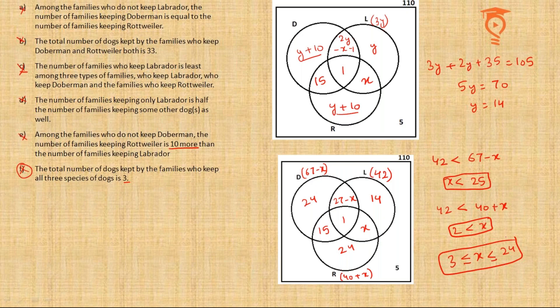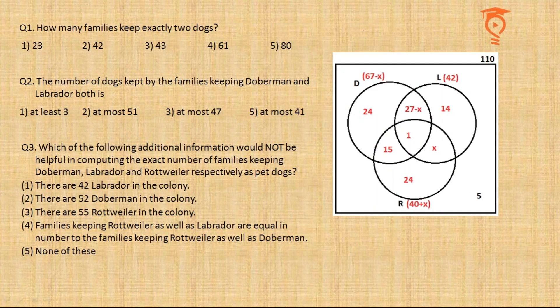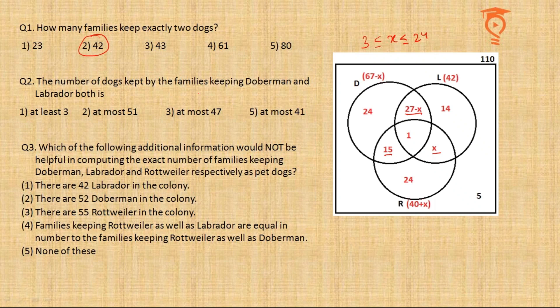With these findings, x ranges from 3 to 24. Now the first question: how many families kept exactly 2 dogs? The three positions for exactly-2-dog families are the pairwise intersections excluding the all-three region. Adding those three numbers — which are independent of x — gives 42 as the answer.